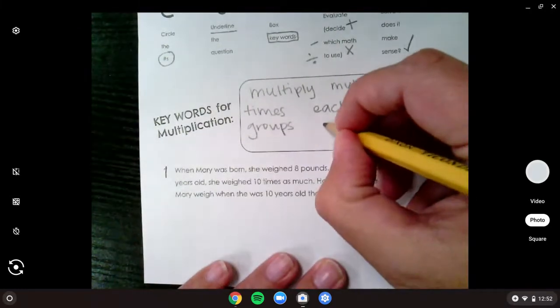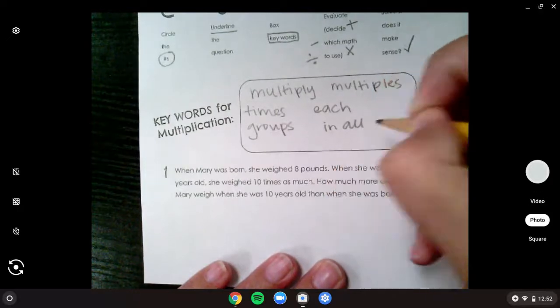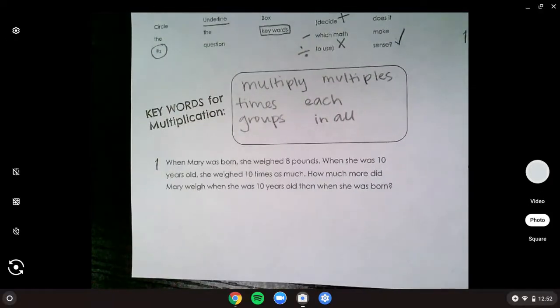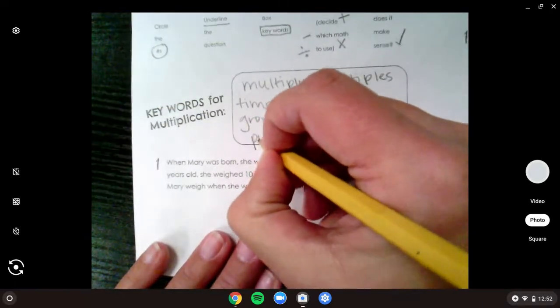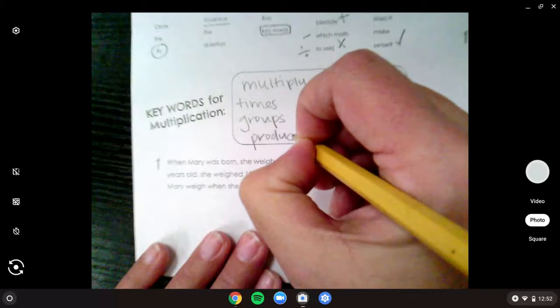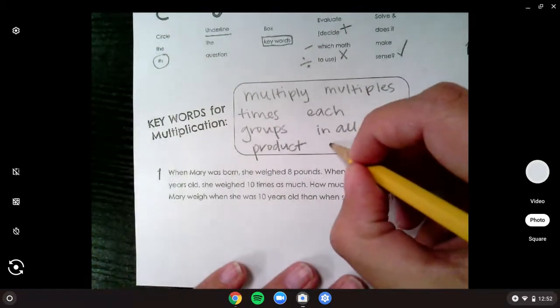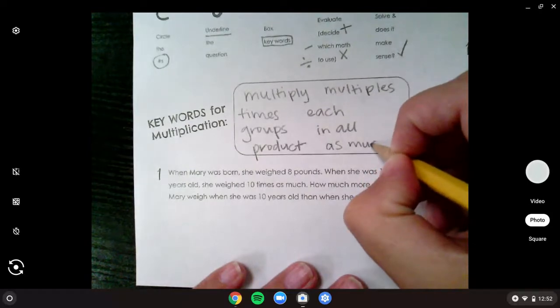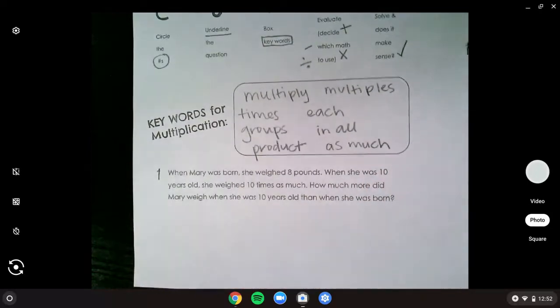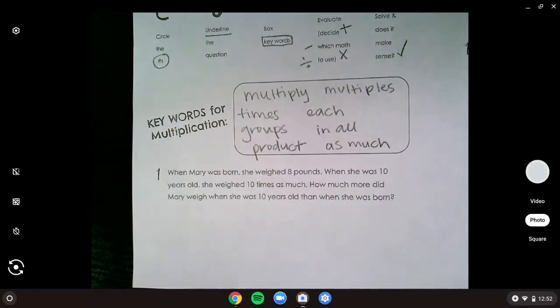We might see the word in all, which also is a little tricky because sometimes in all can mean addition, right? So this one's tricky. Another one we might see is if it asks for the product, because we know product is the answer to what kind of problem? Multiplication. Or you might see as much. You might see as much, like as much in the group.